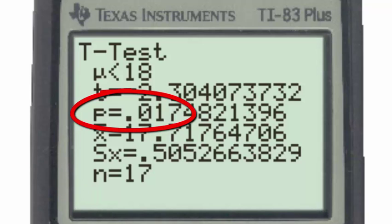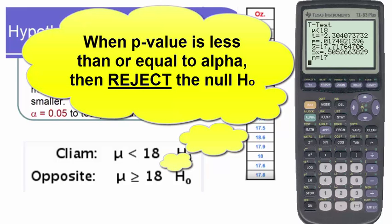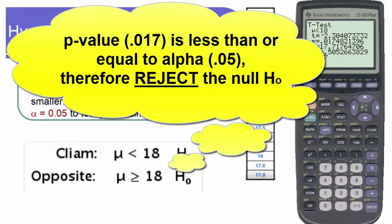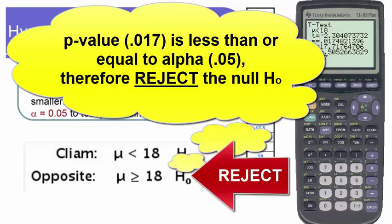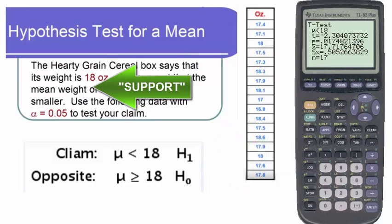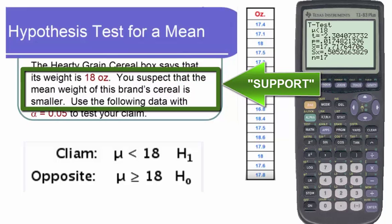The p-value of .017 is compared to alpha of .05. Using the p-value method: when the p-value is less than the alpha level of significance, we reject the null hypothesis. That is the case here — .017 is less than .05. Therefore, we reject the null hypothesis and support the alternative hypothesis. Since the claim in this problem is the alternative hypothesis, our decision is to support our suspicion that the average weight in the Hardigrain cereal box is less than the 18 ounces stated on the label.